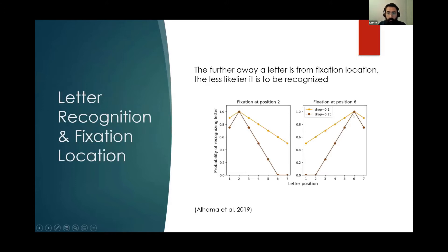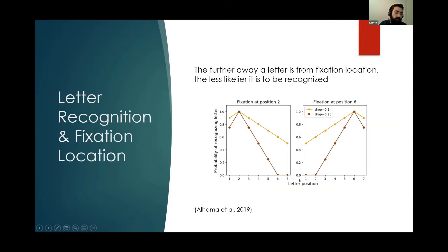For example, if you decide to focus on letter position six, the figure on the right shows that for the word 'tragedy,' that would be the letter D — you recognize the letter D completely, 100% certain. But as you start to move further and further away, the probability of a successful perception drops down. You might not recognize, for example, that the letter the word begins with is a T. This is from the 2019 study by Alhama, Frost, Siegelman, and Armstrong, in which they studied the relation between fixation location and what they call entropy difference.